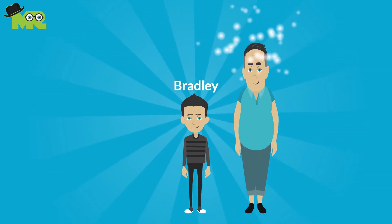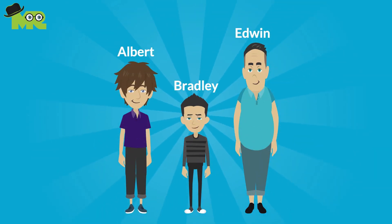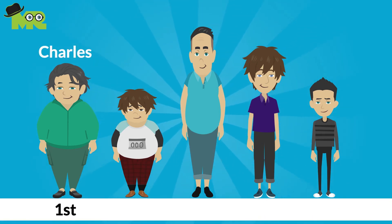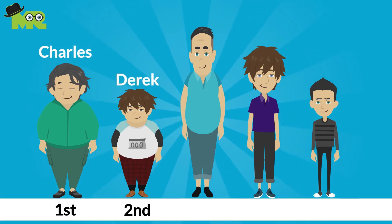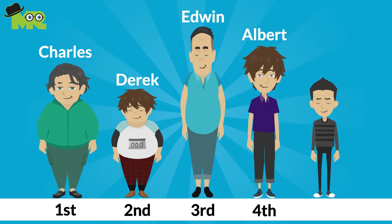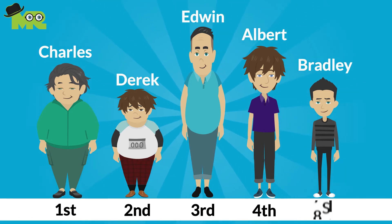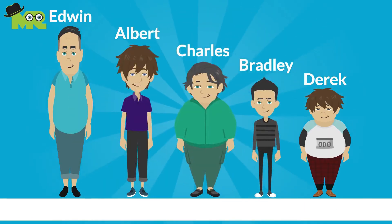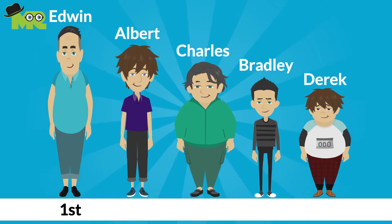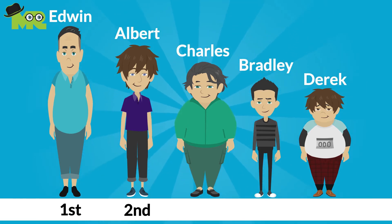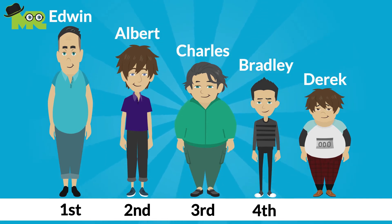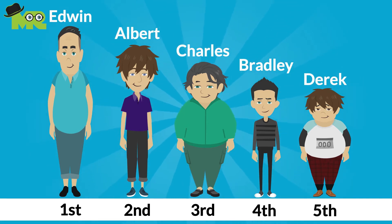Bradley is lighter than Edwin and Albert respectively. So weight-wise: Charles is the heaviest, Derek is number two, Edwin is number three, Albert is number four, and Bradley is the lightest. Height-wise: Edwin is the tallest, Albert is number two, Charles number three, Bradley is number four, and Derek is the shortest.